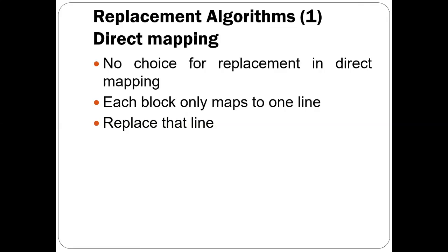Before this, we discussed three different cache design elements. First is cache addresses, where we have seen physical cache and logical cache addressing. The next was cache size — the different cache sizes for different levels of cache like L1, L2, and L3. Then we saw an important topic called mapping functions: direct mapping, set associative mapping, and associative mapping. We also did problems based on this topic.